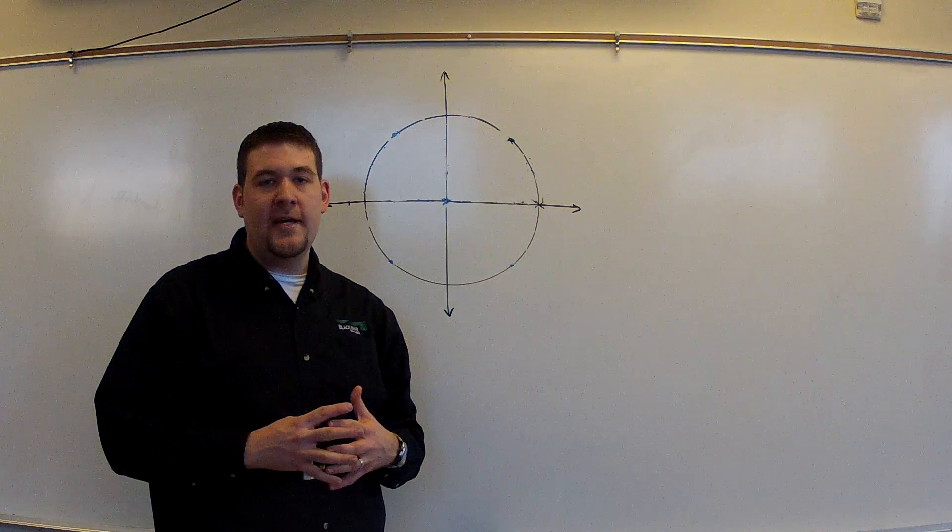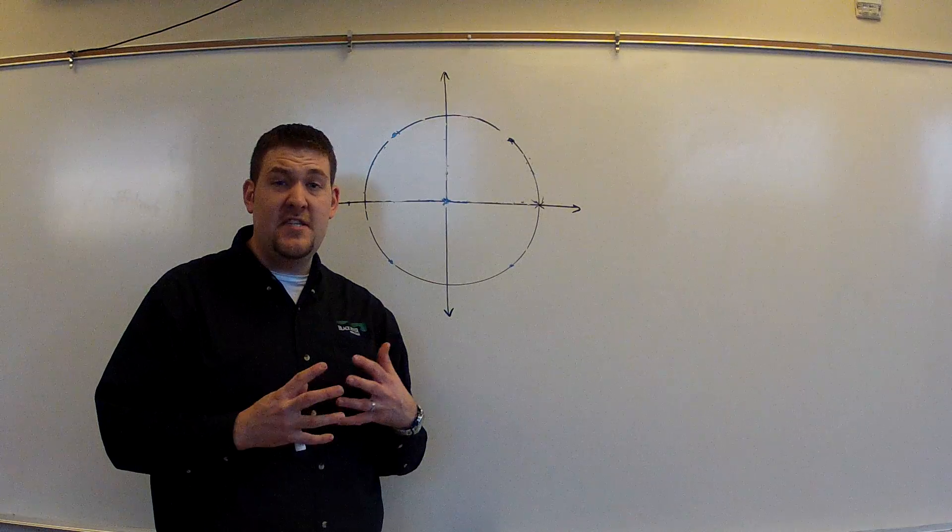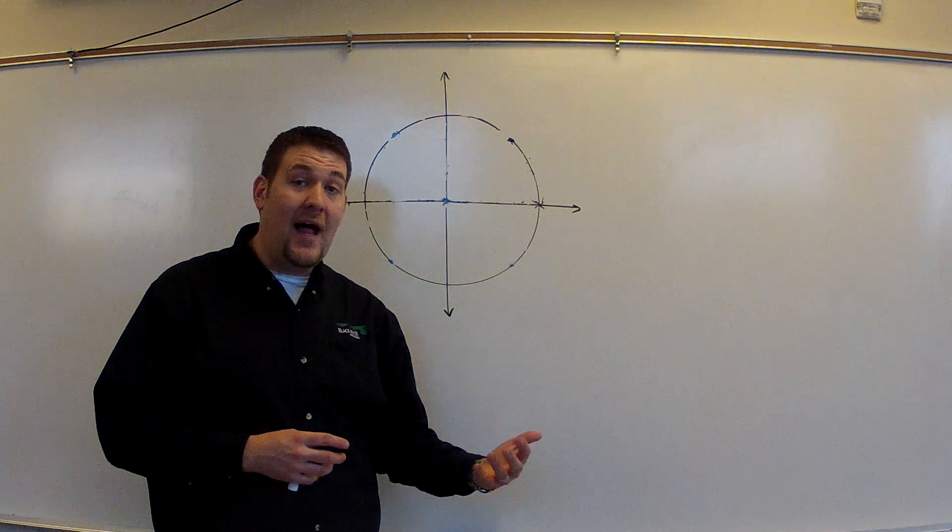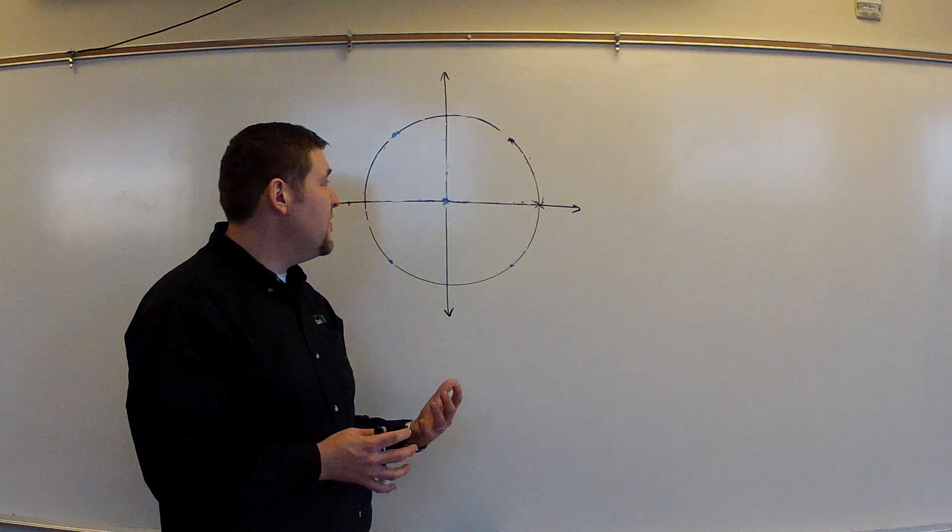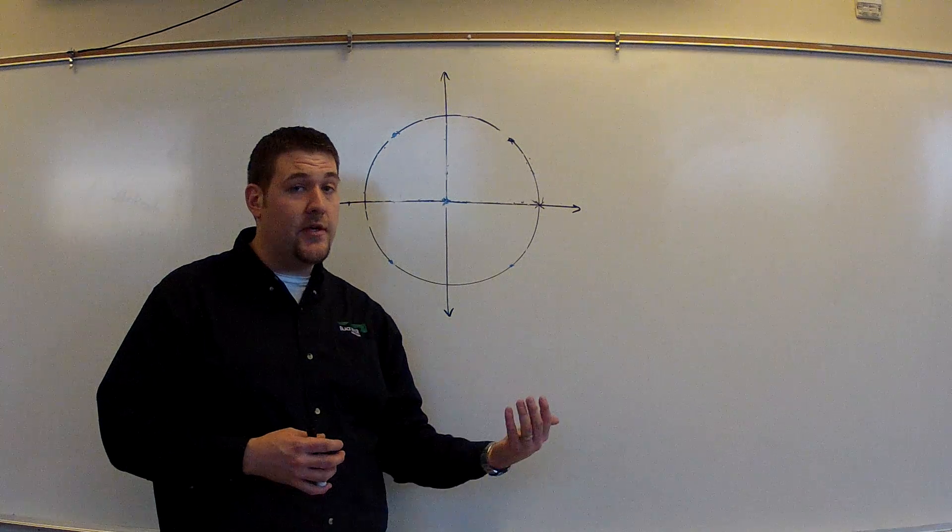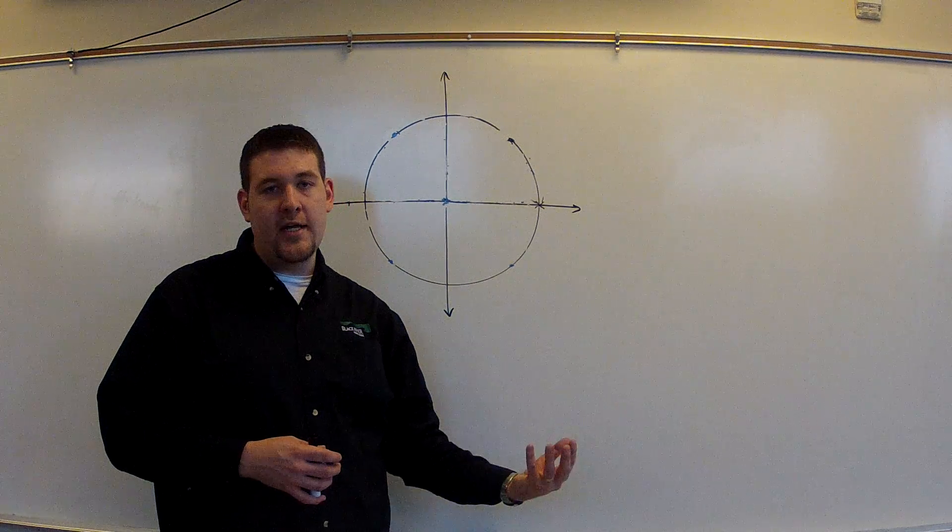Okay class, so the reason we've been learning about radians and the reason we've been learning about position around a circle is of course to apply that to real situations. So the circle can be considered a useful thing for anything that has a circular motion, something that's turning in a circle.